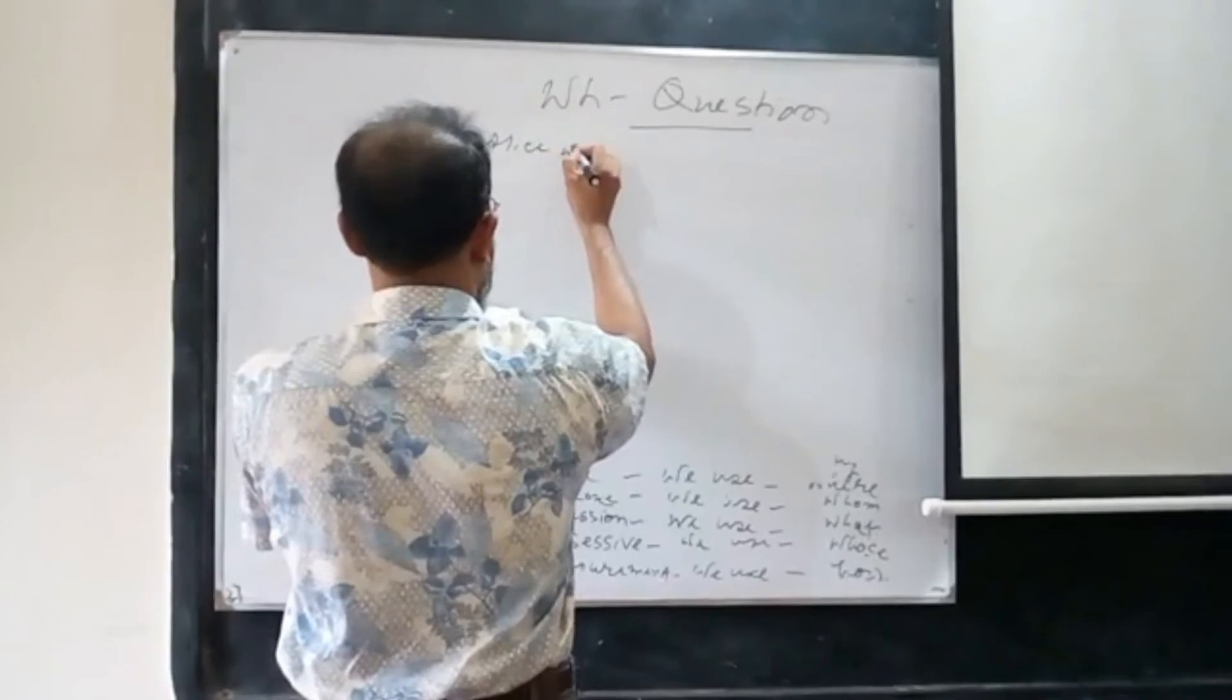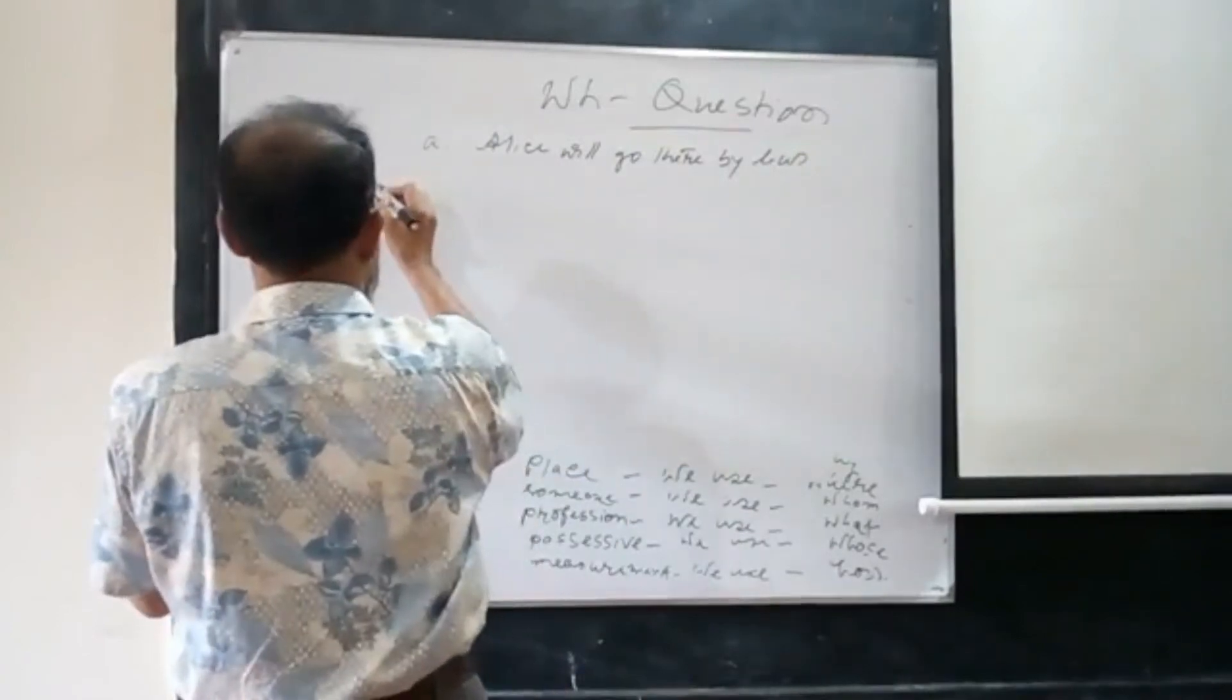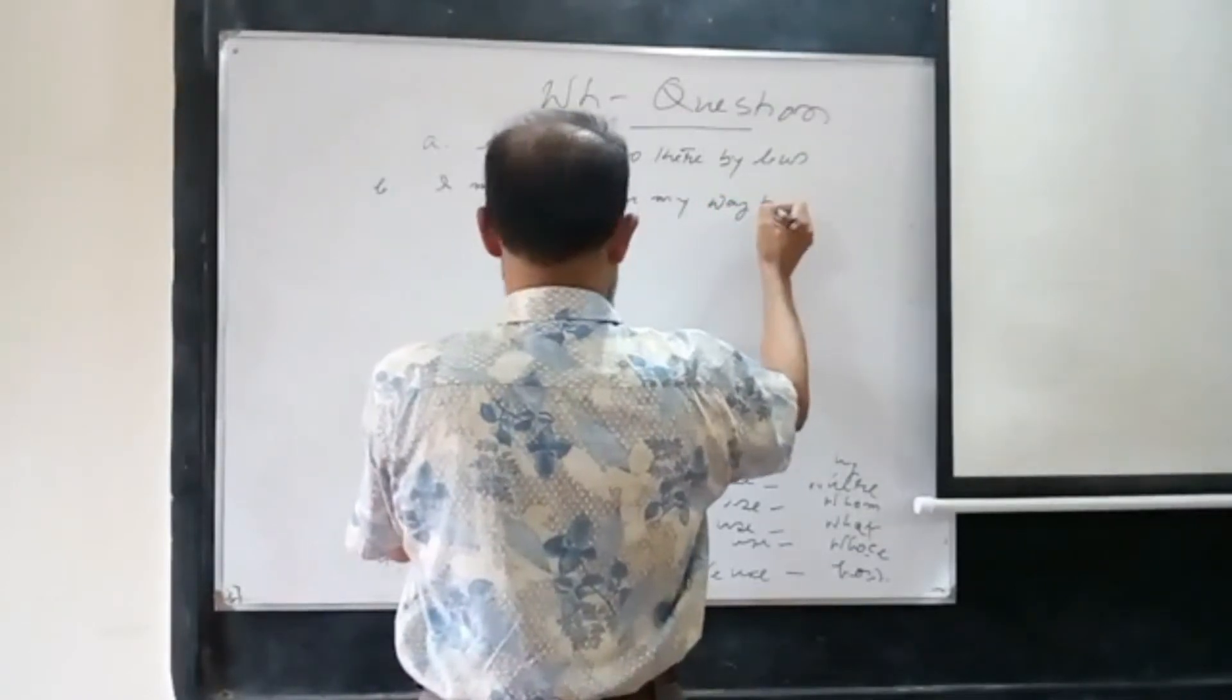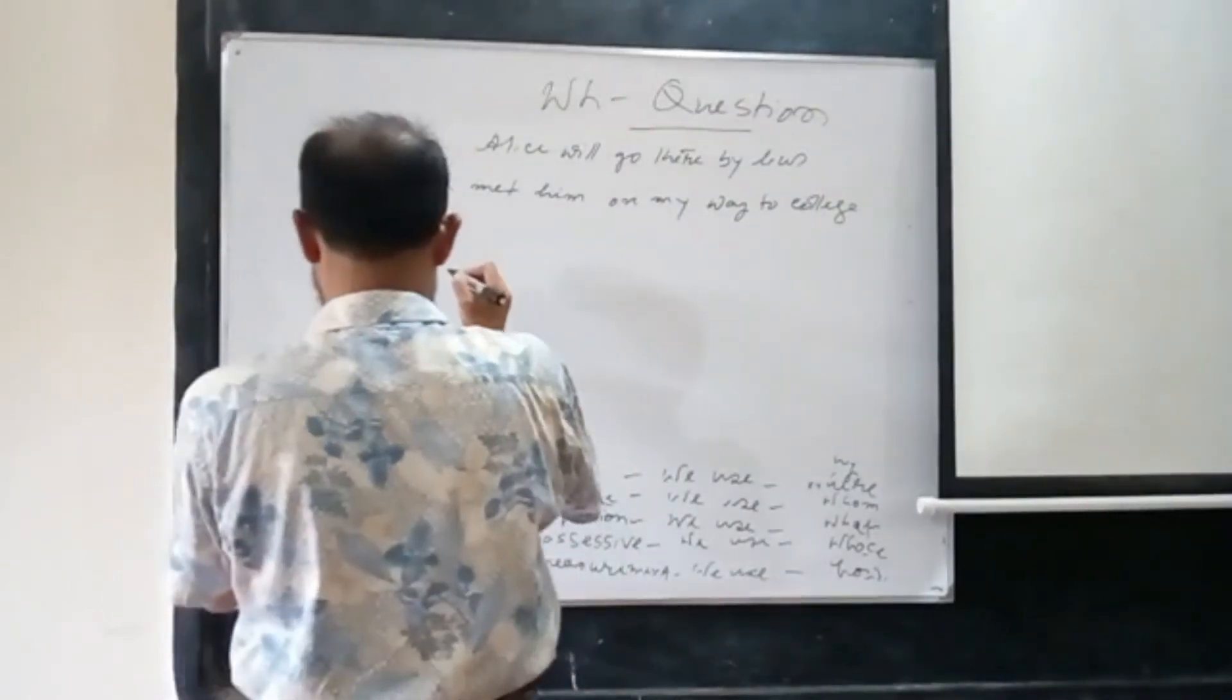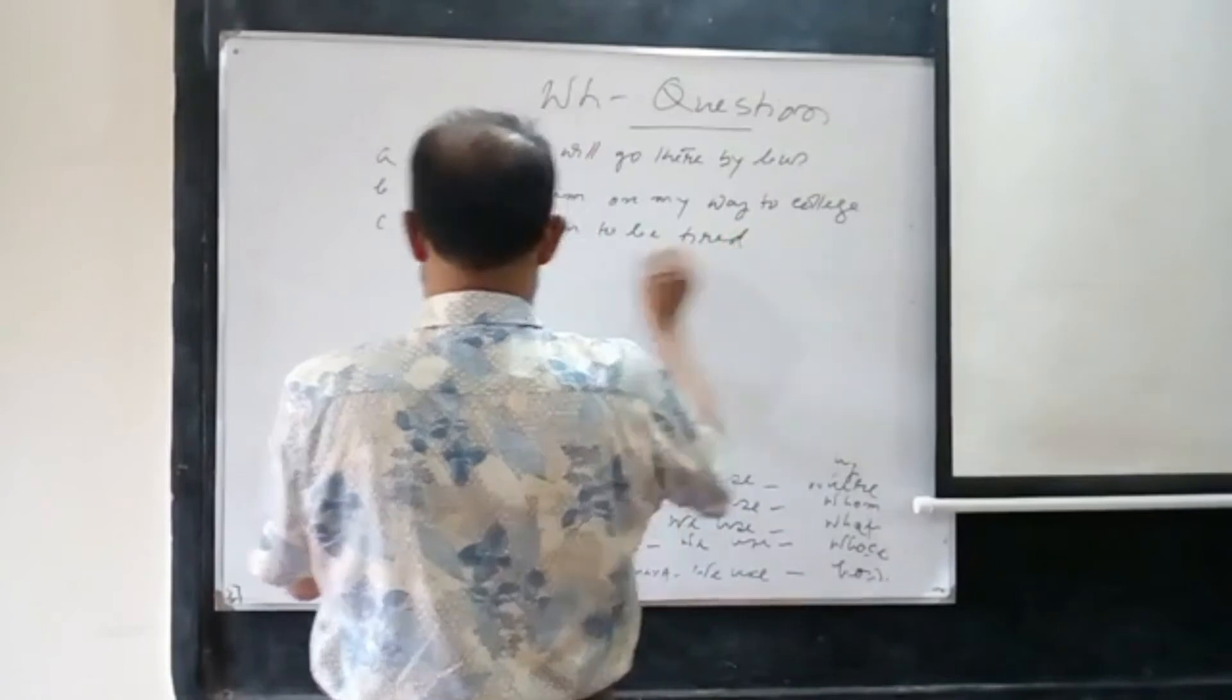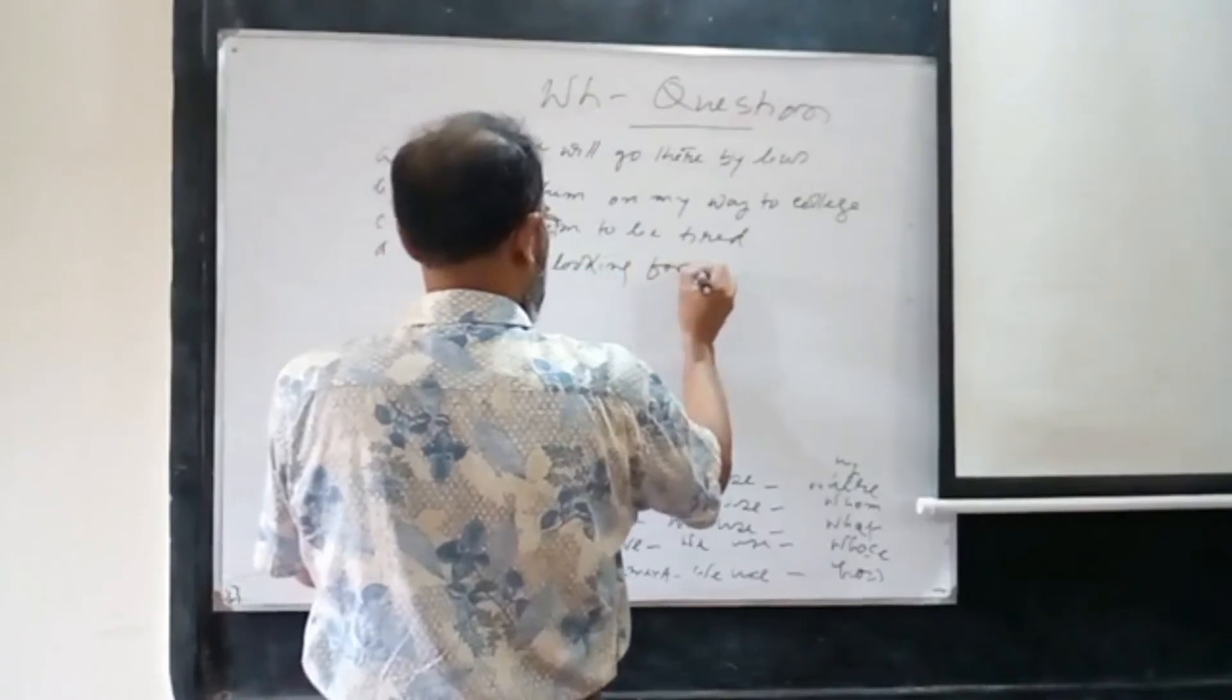Number A: Alice will go there by bus. Number B: I meet him on my way to college. Number C: They seem to be tired. Number D: I am looking for my bag.